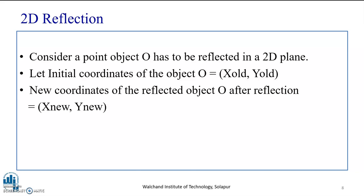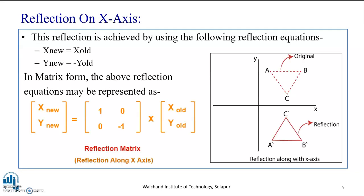Consider a point object O that has to be reflected in a two-dimensional plane. Let the initial coordinates of the object O be x-old and y-old, and the new coordinates of the reflected object after reflection be x-new and y-new. For reflection on the x-axis, as seen in the given diagram, the original graphic primitive triangle ABC is reflected along the x-axis. This reflection is achieved using the reflection equation: x-new equals x-old, and y-new equals minus y-old.